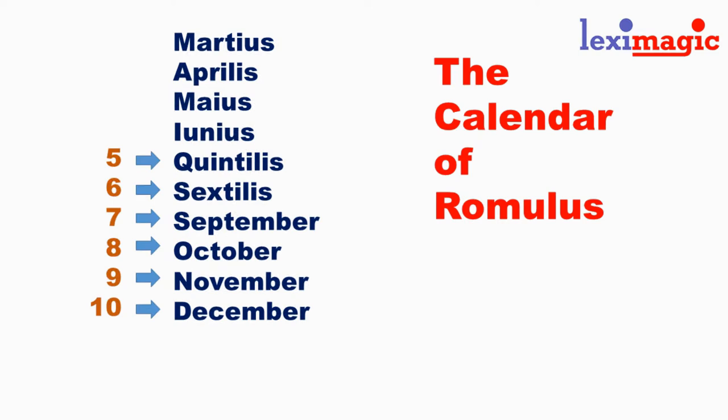His calendar had only ten months, and if you watch carefully, we find the roots pertaining to five, six, seven, eight, nine, and ten in the months Quintilis, Sextilis, September, October, November, and December.